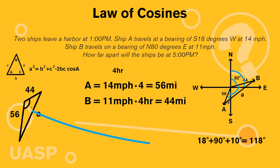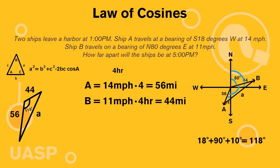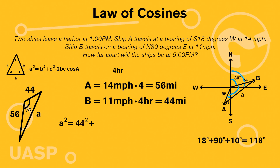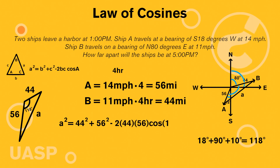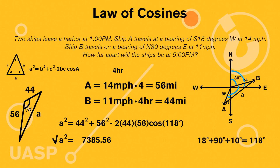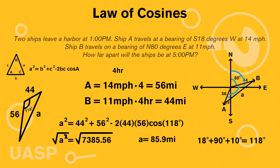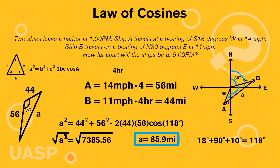Now we plug everything into our law of cosines equation. We're finding A, so: a squared equals 44 squared plus 56 squared minus 2 times 44 times 56 times cosine of 118 degrees. When you plug all of that in, you get a squared equals 7385.56. Taking the square root of both sides, we get A equals 85.9 miles. Make sure you include units — the ships are 85.9 miles apart. That's the law of cosines in a nutshell.